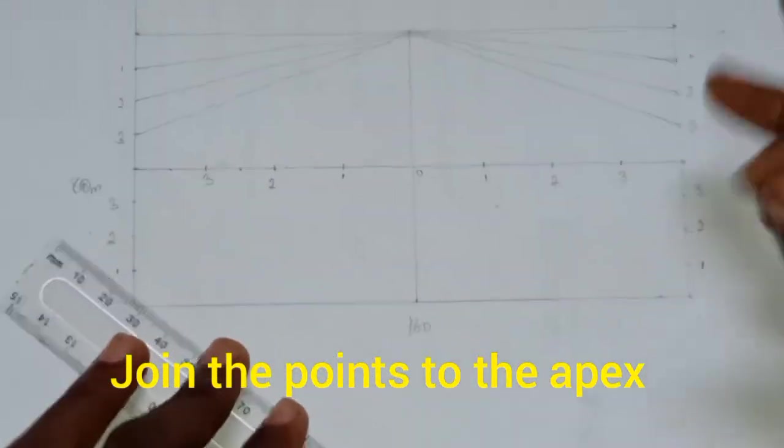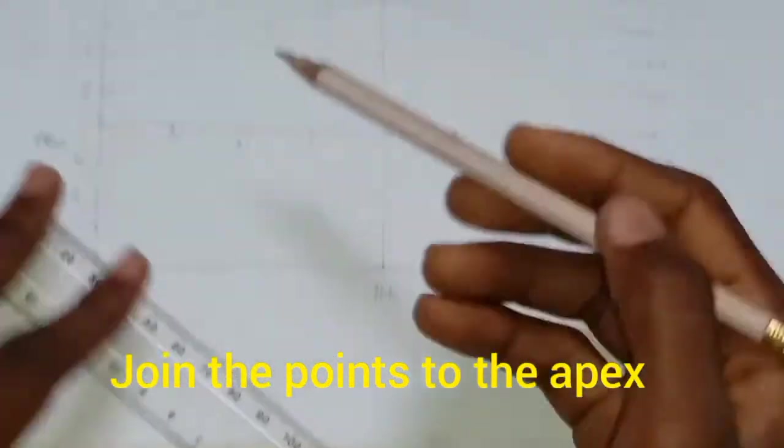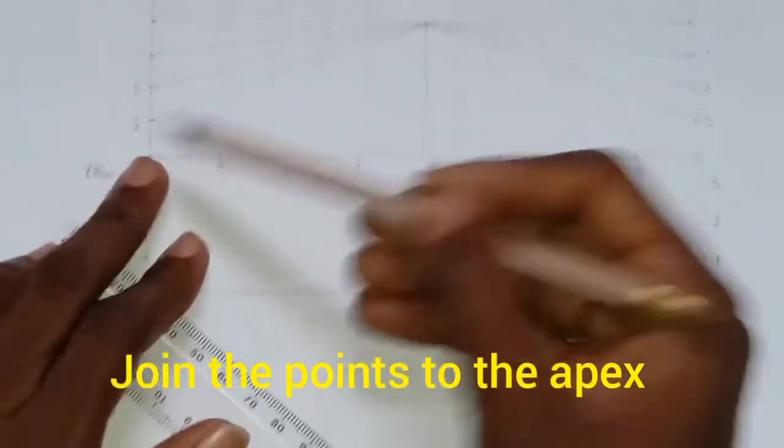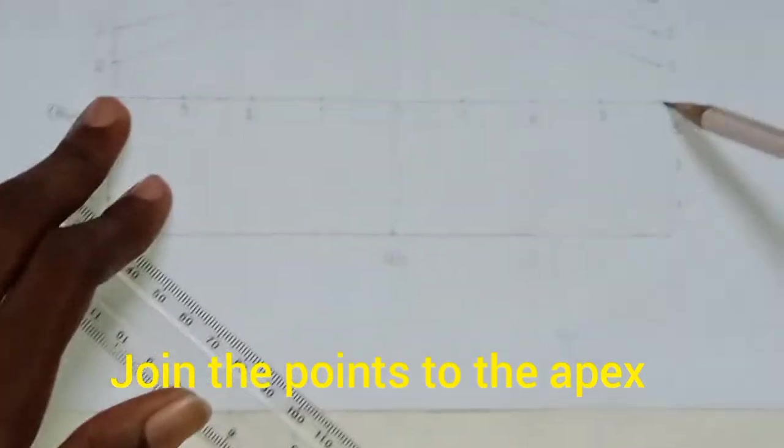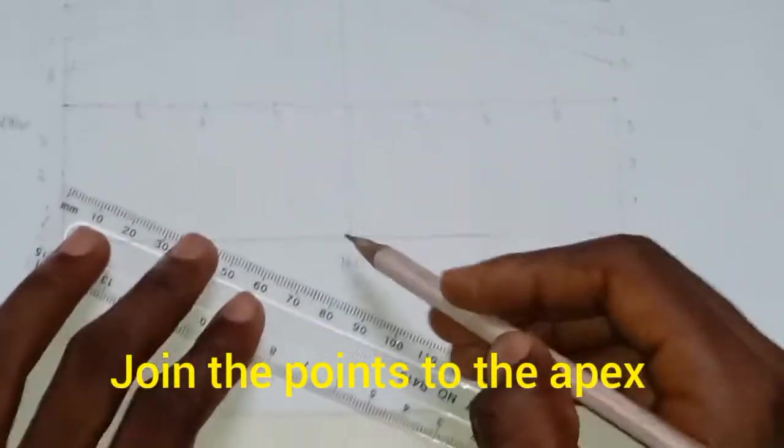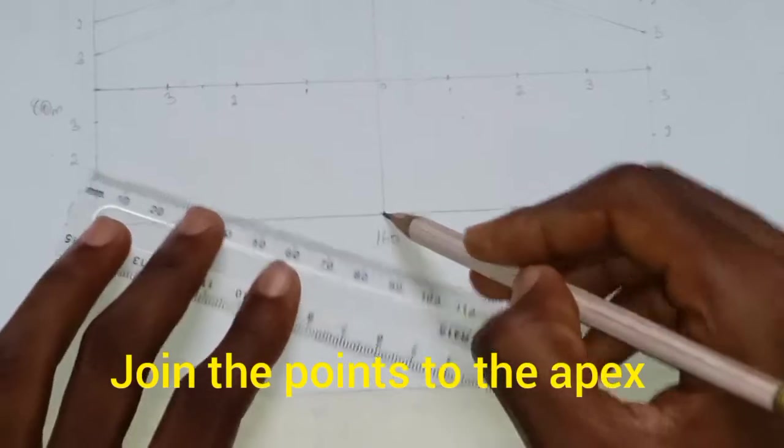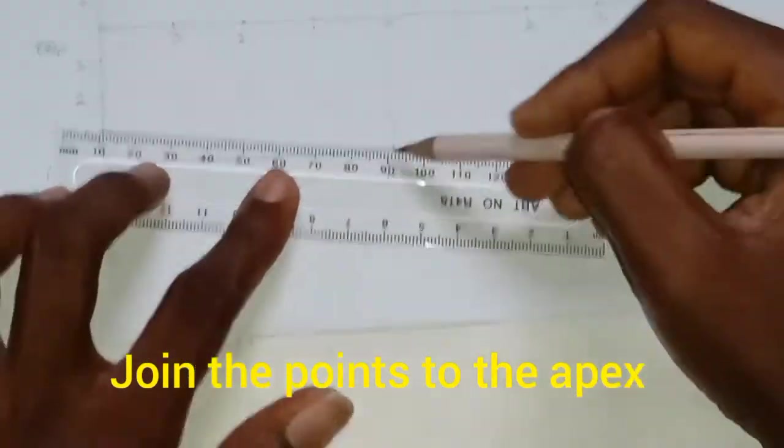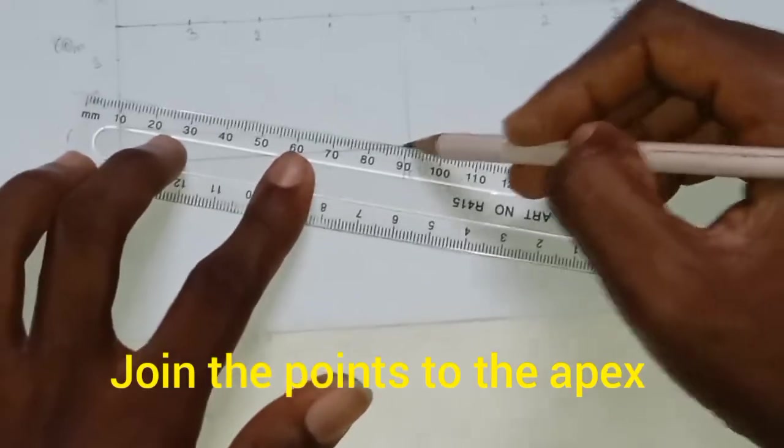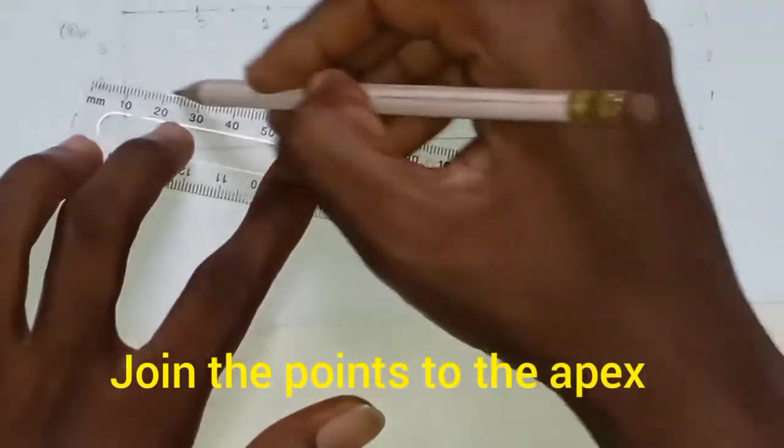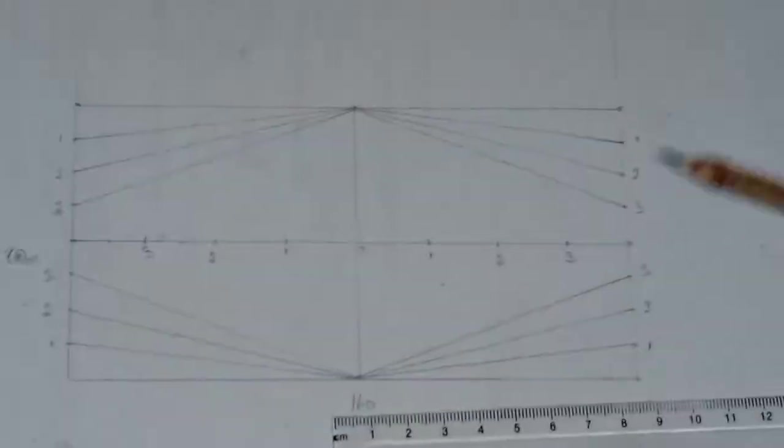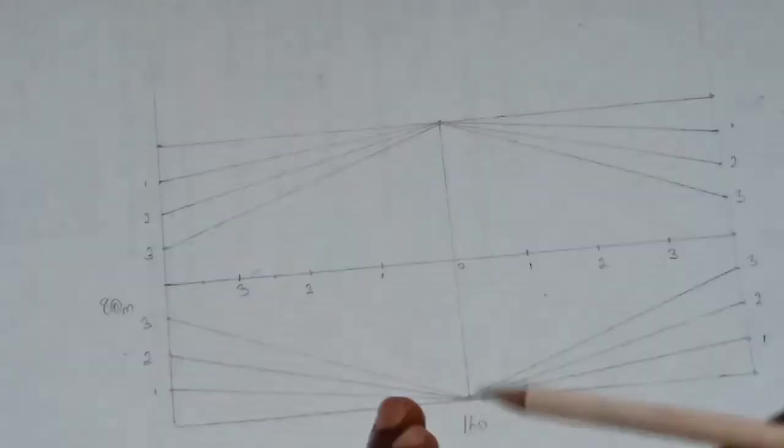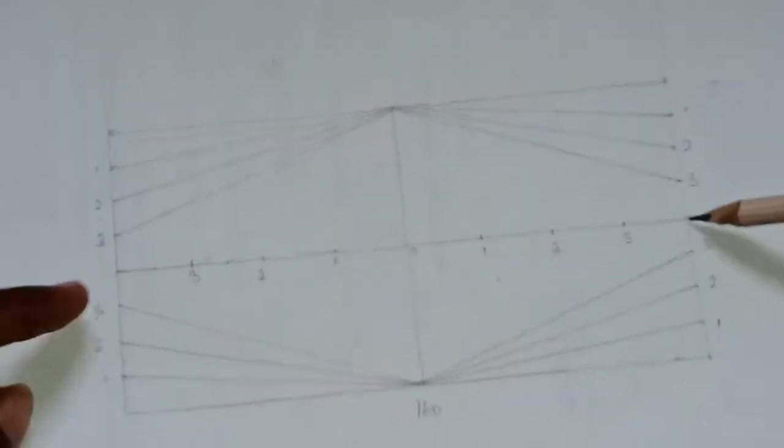We do the same thing here. Mind you, don't join here to this last point. We don't need it. So we'll do the same thing down too, joining this point to this part. So we successfully joined our points.